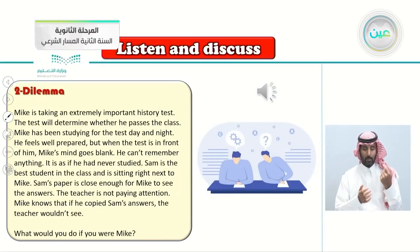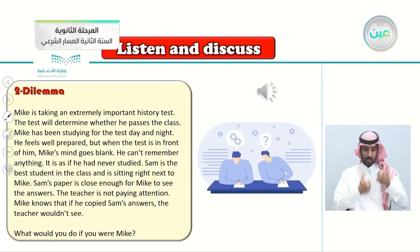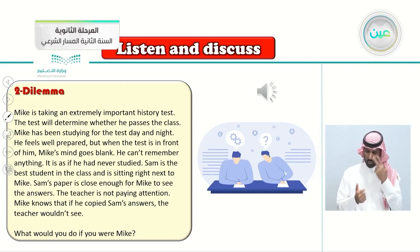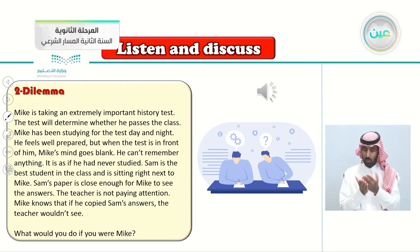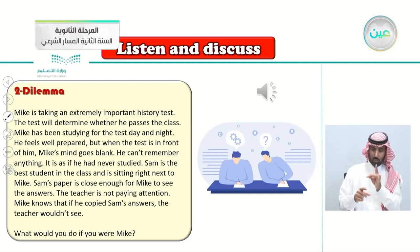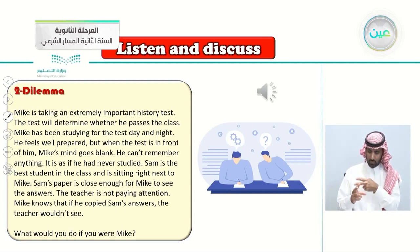Dilemma number two: Mike is taking an extremely important history test that will determine whether he passes the class. Mike has been studying for the test day and night and feels well prepared, but when the test is in front of him, his mind goes blank — he can't remember anything, as if he had never studied. Sam, the best student in the class, is sitting right next to Mike, and his paper is close enough for Mike to see the answers. The teacher is not paying attention. Mike knows that if he copied Sam's answers, the teacher wouldn't see. What would you do if you were Mike?